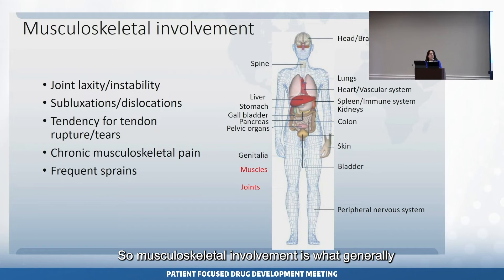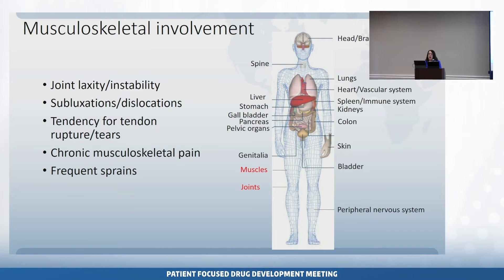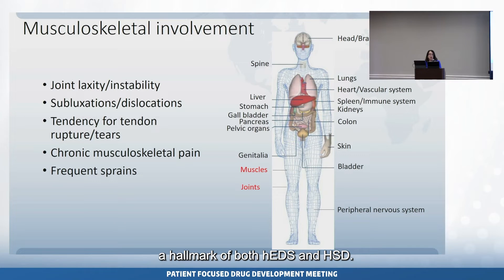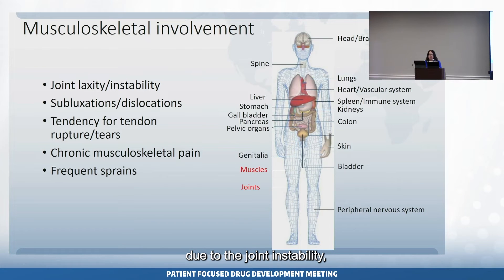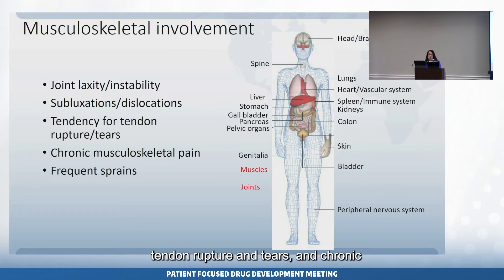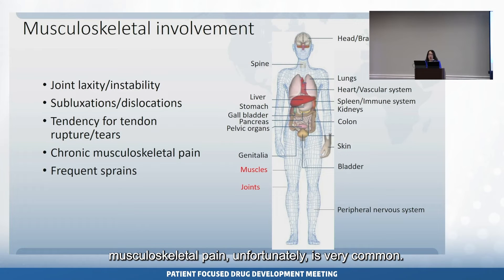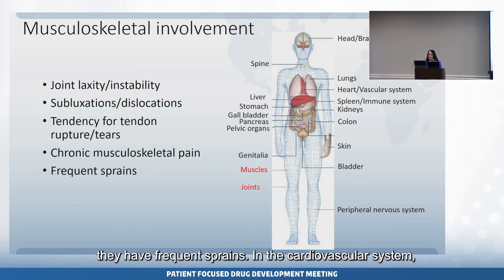Musculoskeletal involvement is what generally brings patients to medical attention. The joint laxity and joint instability is a hallmark of both hEDS and HSD. Patients may have subluxations or dislocations due to the joint instability. Some patients have a tendency for tendon rupture and tears. Chronic musculoskeletal pain, unfortunately, is very common. Patients frequently report that their ankles roll and they have frequent sprains.